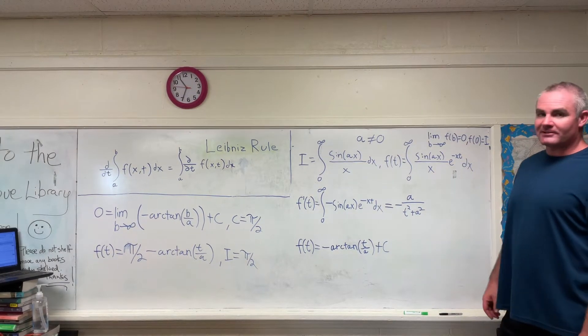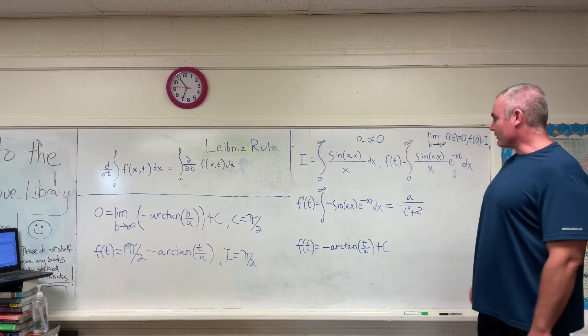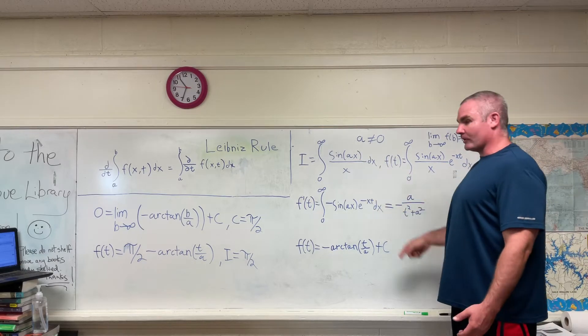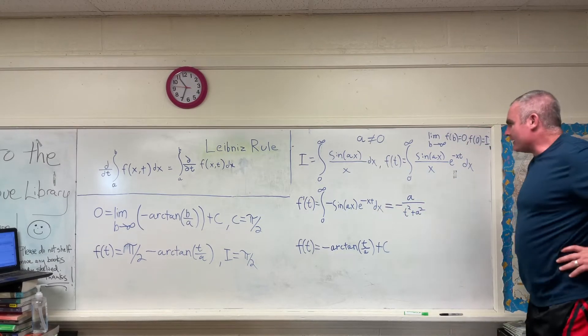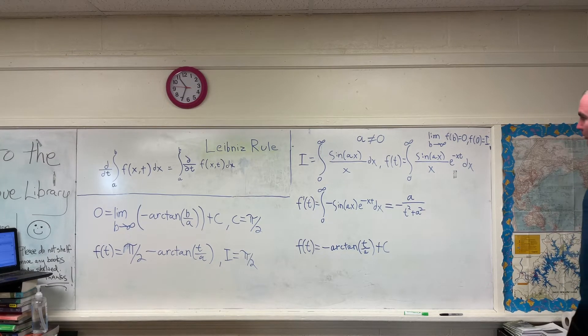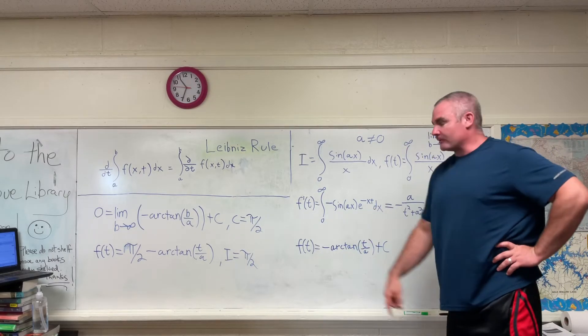Now a lot of you have probably seen something similar. It's a pretty common integral to evaluate on the internet, zero to infinity of sine x over x dx. But I thought I'd show this one and show that no matter what you put in for a, as long as it's not zero, you'll still get pi over 2.